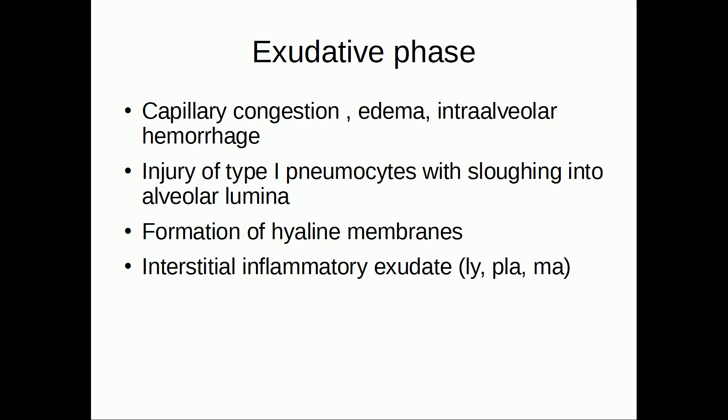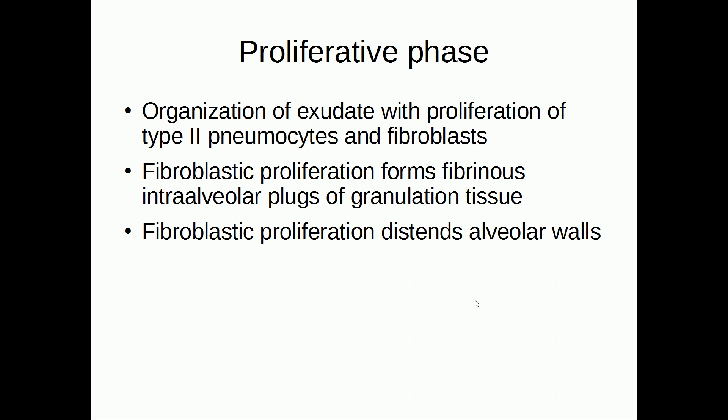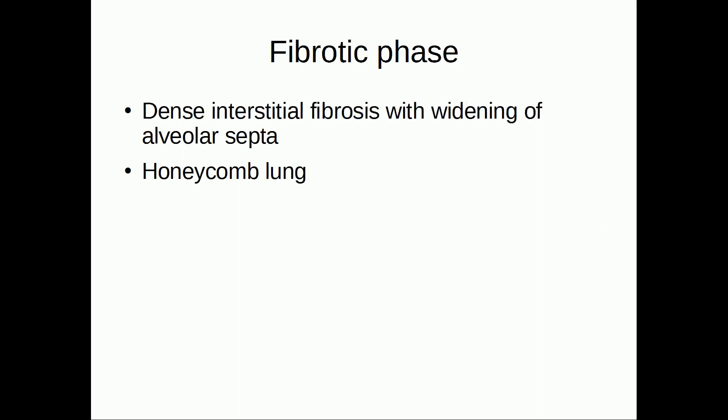The exudate is not only in the alveoli but also in the interstitium, and we can see inflammatory cells like lymphocytes, plasma cells, and macrophages. Over time, the acute phase can lead to the proliferative phase, characterized by organization of the exudate with proliferation of type 2 pneumocytes and fibroblasts. Fibroblastic proliferation forms fibrinous intra-alveolar plaques of granulation tissue and also distends the alveolar walls. Over time this can lead to the chronic or fibrotic phase, defined by dense interstitial fibrosis with widening of the alveolar septi, sometimes described as honeycombing of the lung.